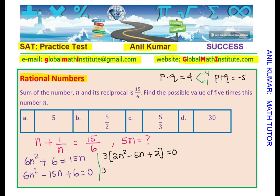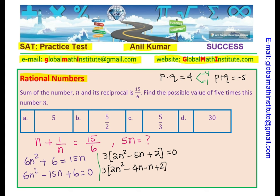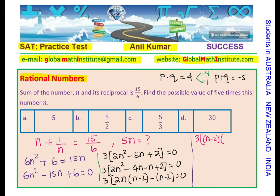We can now rewrite this as 2n squared minus 4n minus n plus 2 equals 0. Factor out 2n from the first two terms — we get n minus 2. Then minus 1 is common in the remaining terms, giving n minus 2. So n minus 2 is common in both terms. We get the factored form: 3 times (n minus 2)(2n minus 1) equals 0.